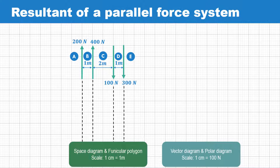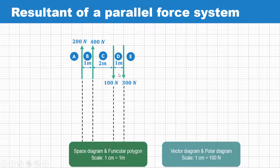The space diagram scale chosen is 1 centimeter equal to 1 meter. So 1 centimeter represents 1 meter, 2 centimeters represent 2 meters, and 1 centimeter represents 1 meter for the respective spacings.